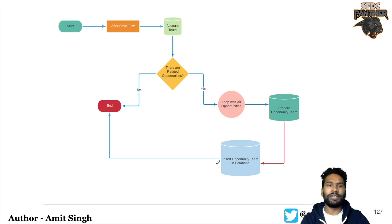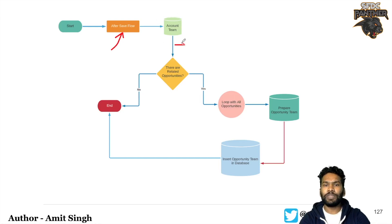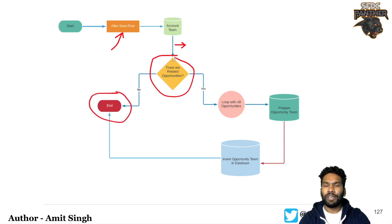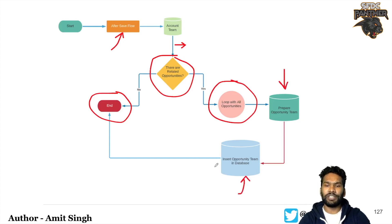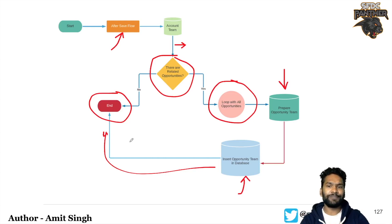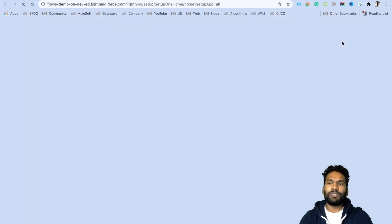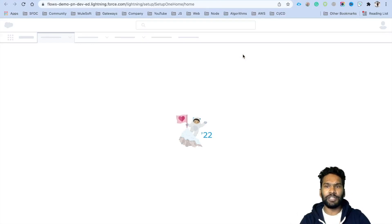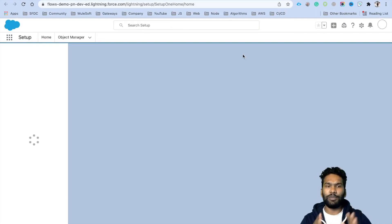The first question is: which kind of flow will this be? It is going to be an after-save flow, because we want to make sure the account team has been inserted first. Once inserted, we get all related opportunities for the account, then use a decision element to check if related opportunities are found. If not, we end the flow. If found, we iterate through opportunities one by one, prepare the opportunity team records, insert them, and end the flow.